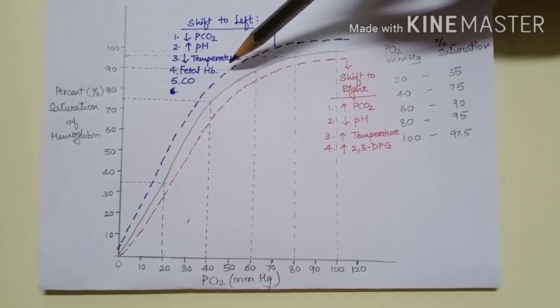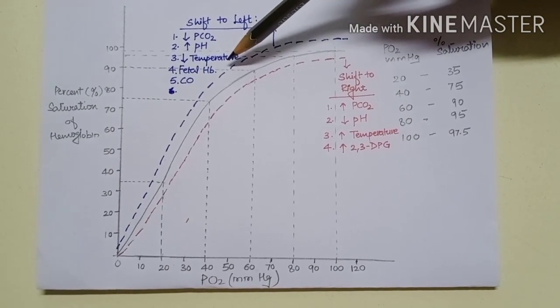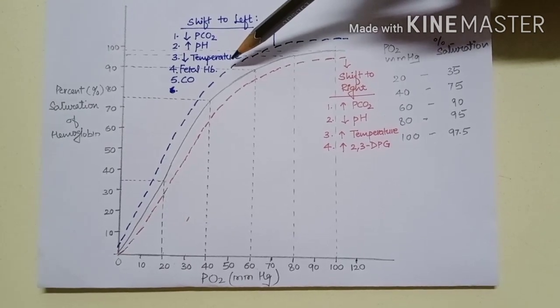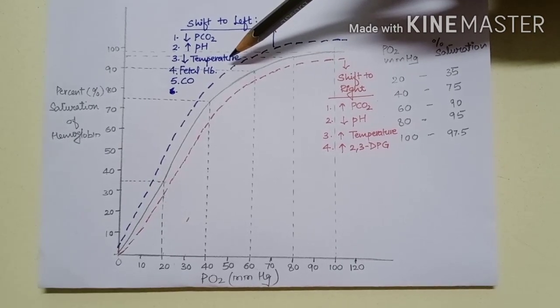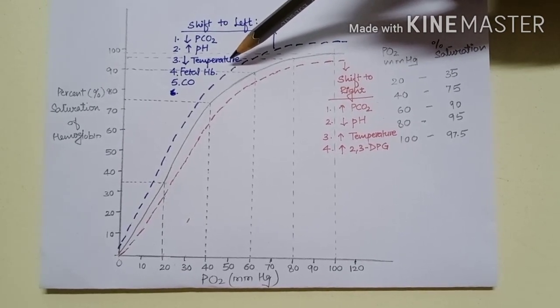Fetal hemoglobin also causes shift to left because fetal hemoglobin has less affinity for 2,3-diphosphoglycerate due to the presence of gamma chains instead of beta chains.